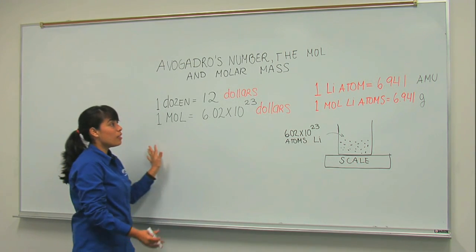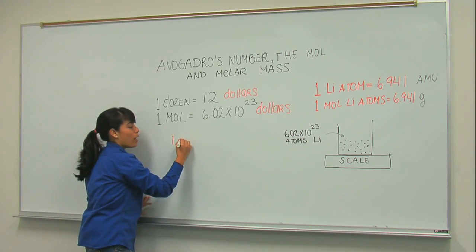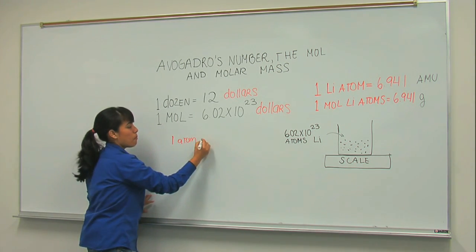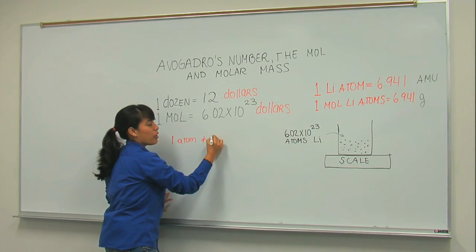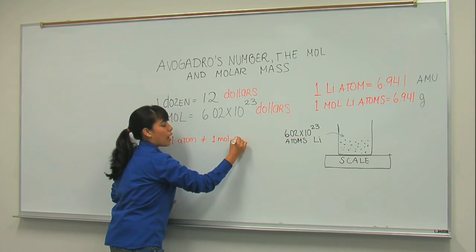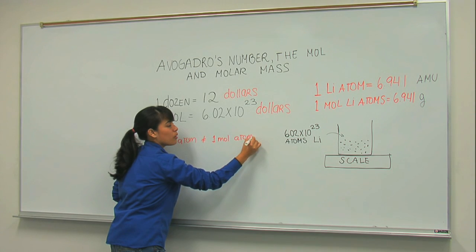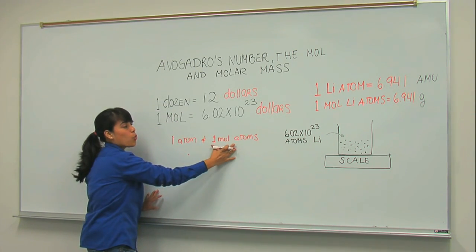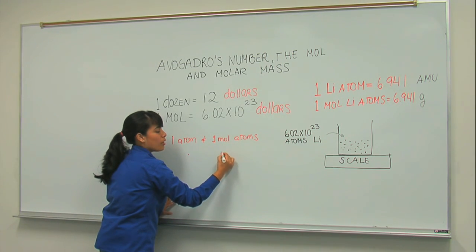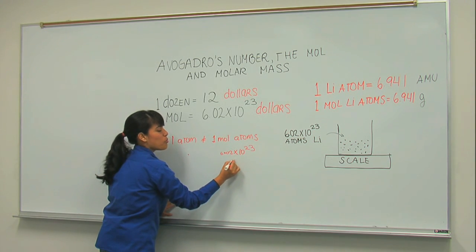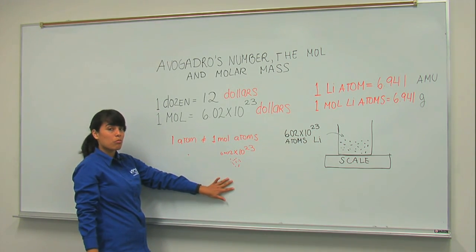So this brings a very important point. Whenever you talk about one atom, it's not the same as talking about one mole of atoms. One atom would be just one. One mole of atoms would be 6.02 times 10 to the 23, which means many, many atoms.